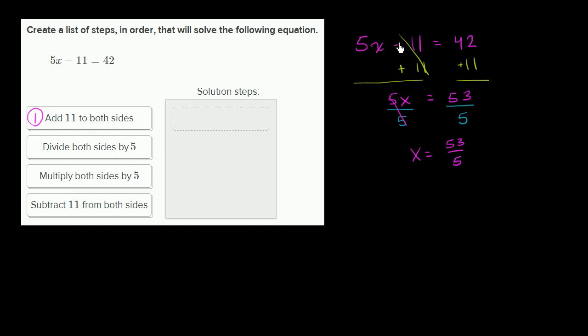I have solved for the x that satisfies this equation. So what's the next thing that I did? Well, I divided both sides by 5. So this right over here is step two. I added 11 to both sides, then divide both sides by 5.